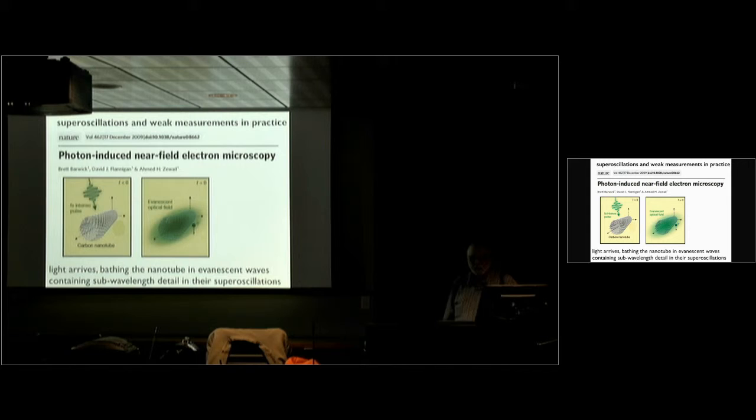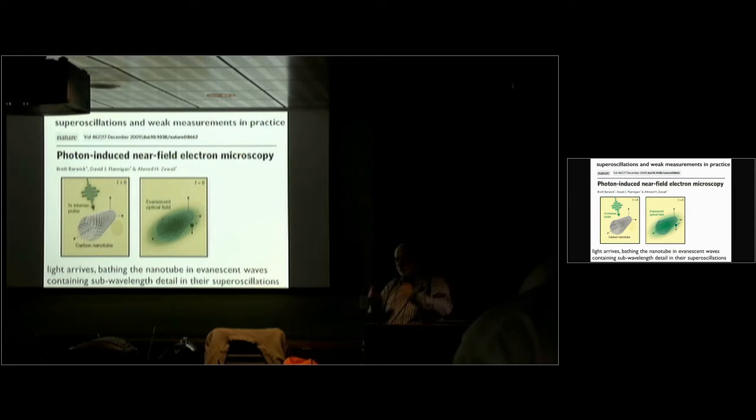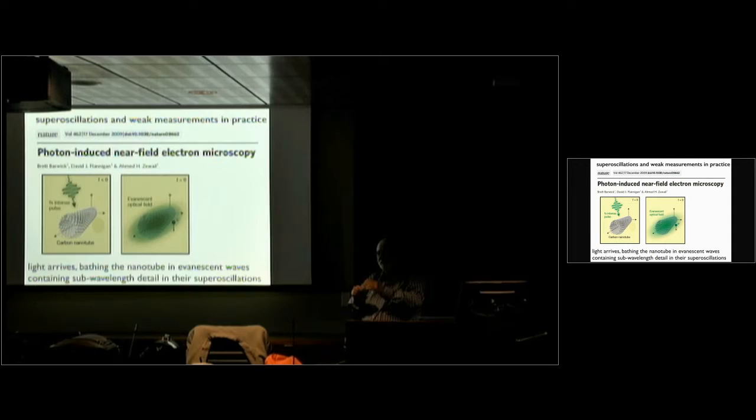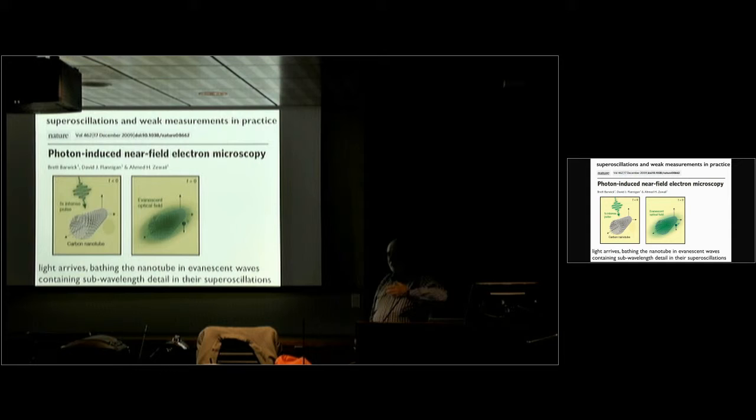That light bathes the nanotube, and near the nanotube there are evanescent waves. Now, the point about evanescent waves is they can contain fine detail. You could call it supra-oscillation — it is fine detail, finer than the wavelength, along the nanotube, but decaying away. And you want the information to be transmitted far away.